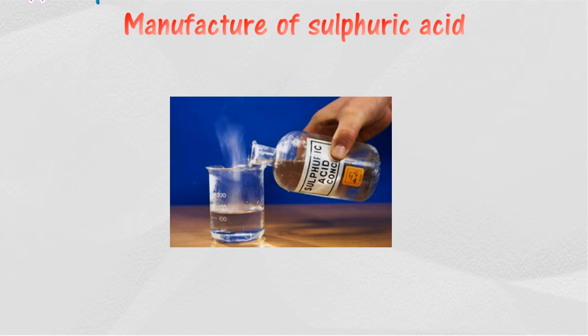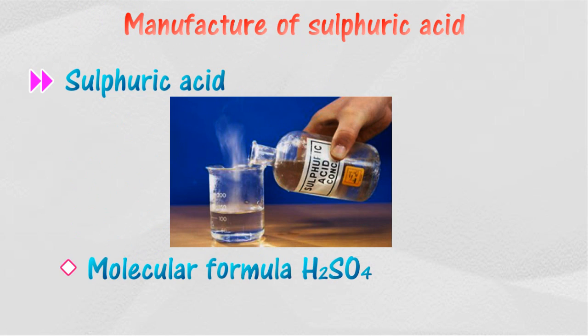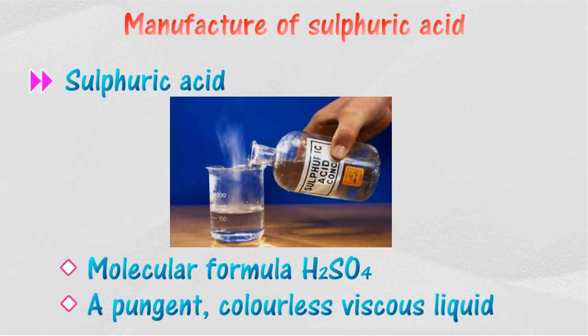Sulfuric acid is one of the most important industrial chemicals. It is a non-volatile diprotic mineral acid with the molecular formula H₂SO₄. It is a pungent, colorless, viscous liquid which is soluble in water at all concentrations.